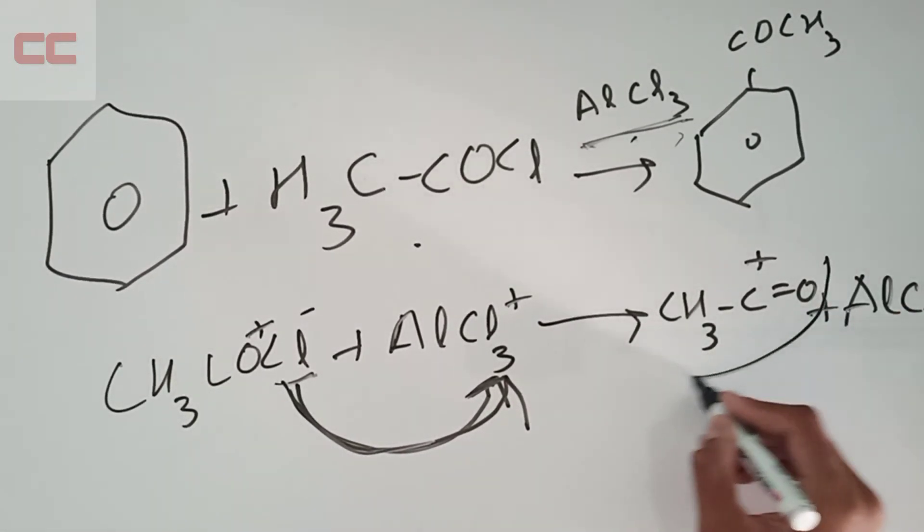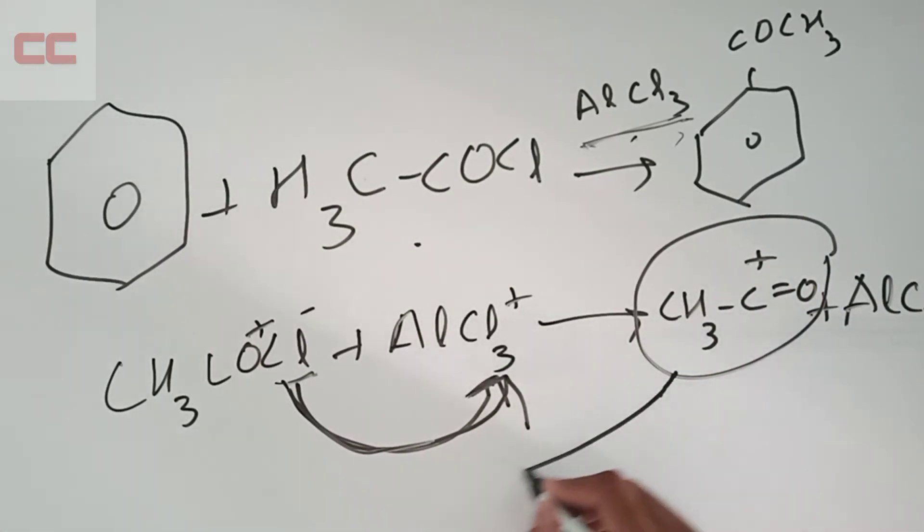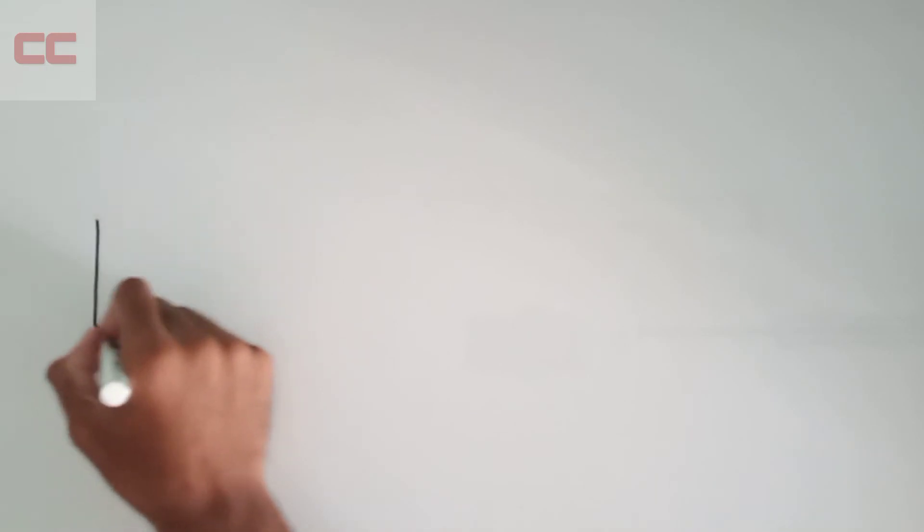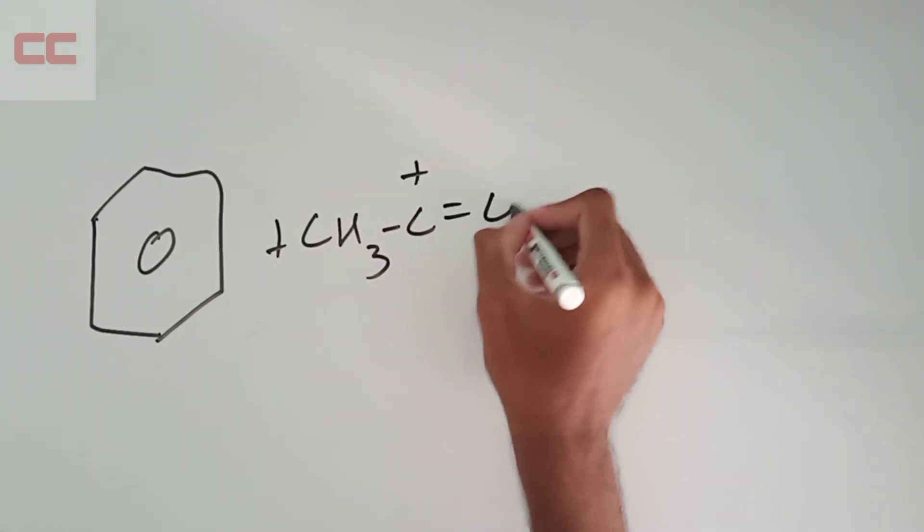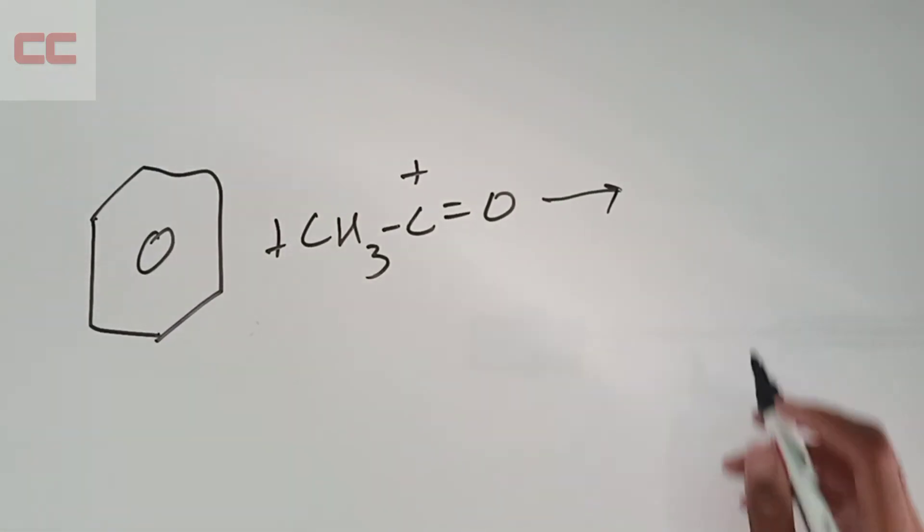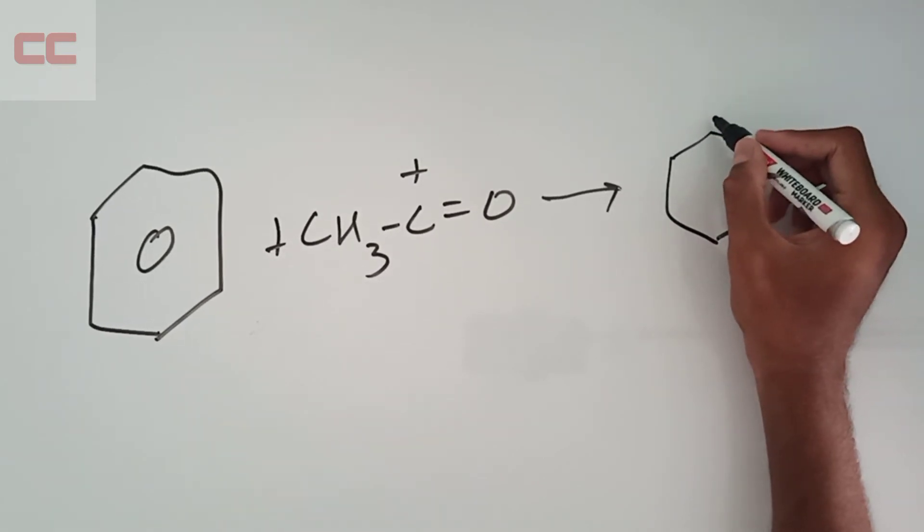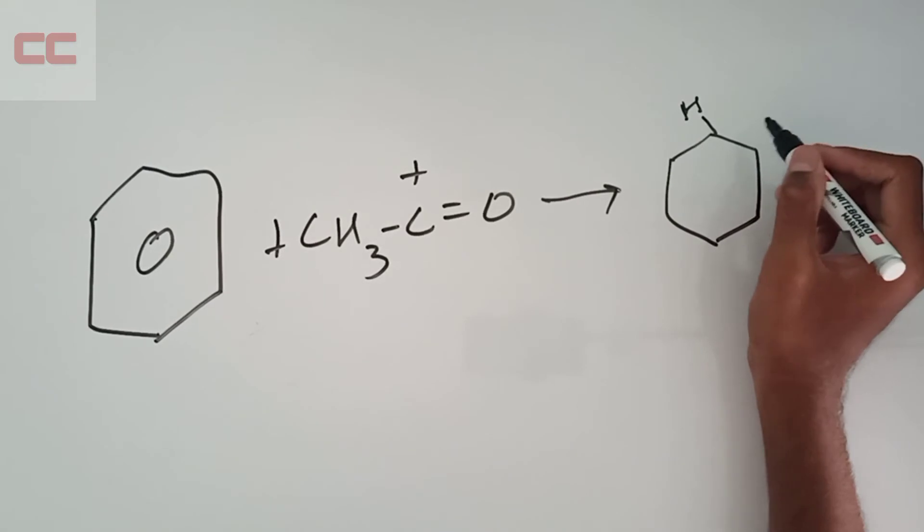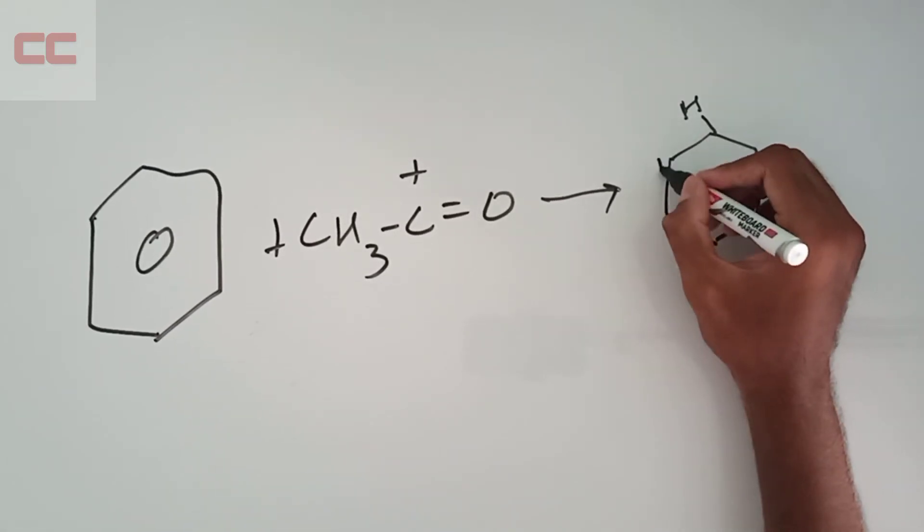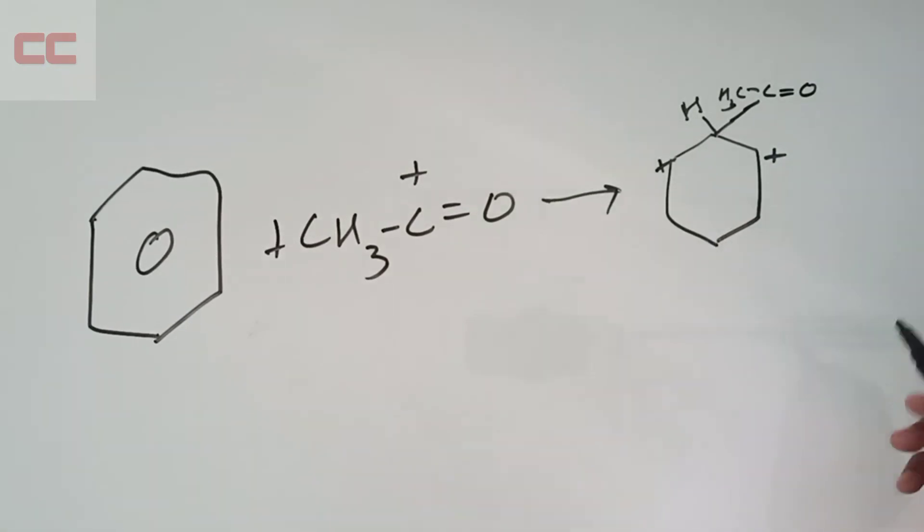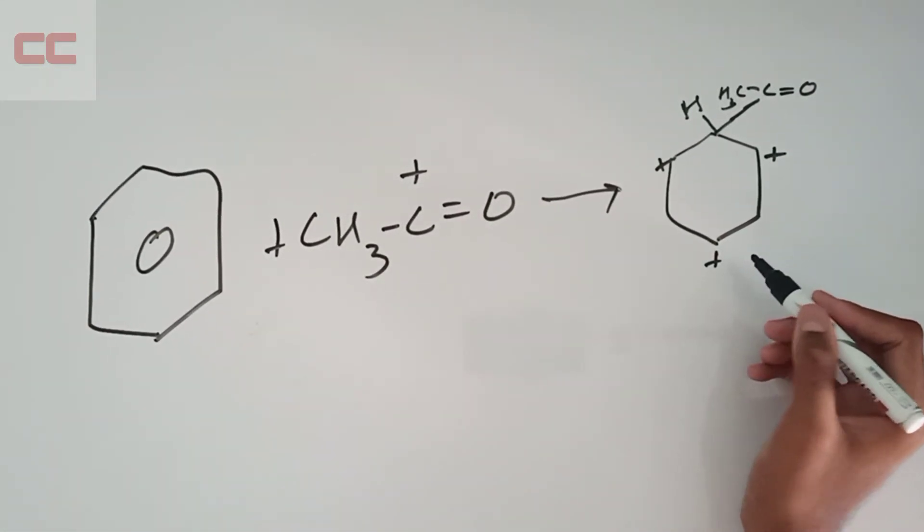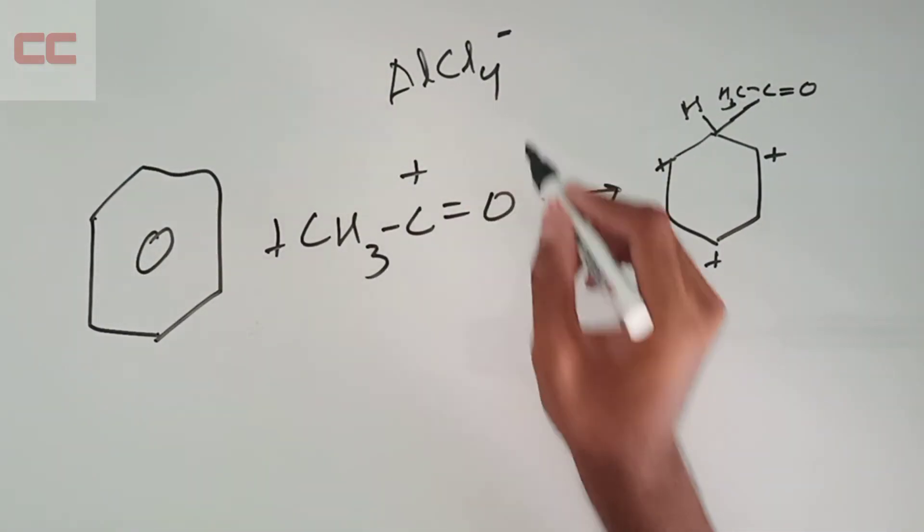Now what happens is that this CH3C double bond O plus goes and attacks our benzene ring. This benzene ring has one hydrogen here, and since this is plus, this becomes plus and this becomes minus. So this CH3C double bond O comes and attaches here. It comes and attaches here, and this is also plus.